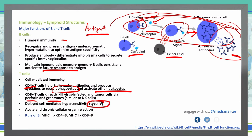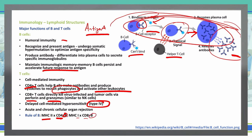With our T cells, you can remember their major histocompatibility complex numbers using the rule of 8. CD4 cells match up with MHC2, because 2 times 4 equals 8. And MHC1 matches up with our CD8 cells, because 1 times 8 is 8. So MHC2 goes with CD4, and MHC1 goes with CD8.